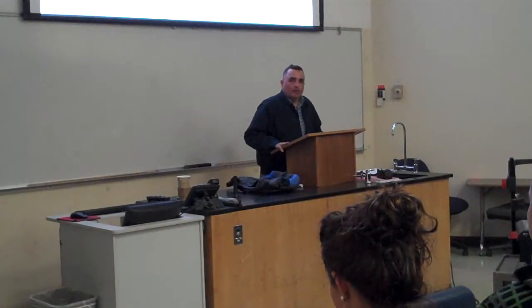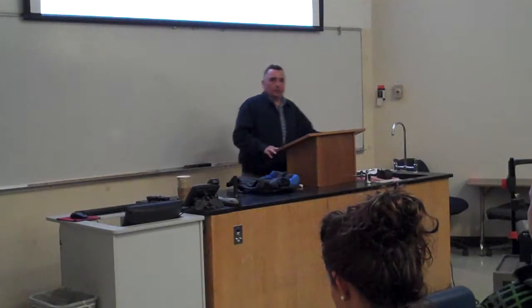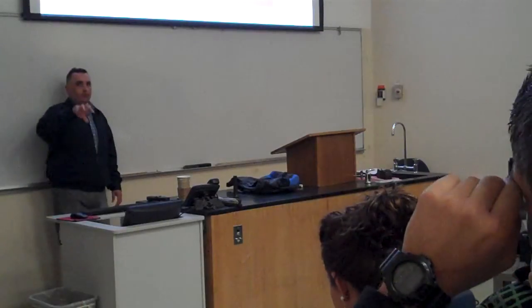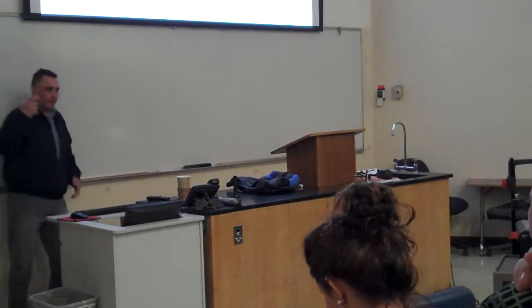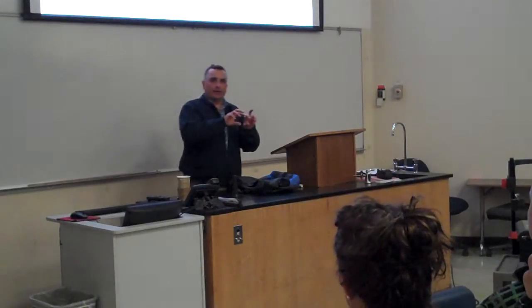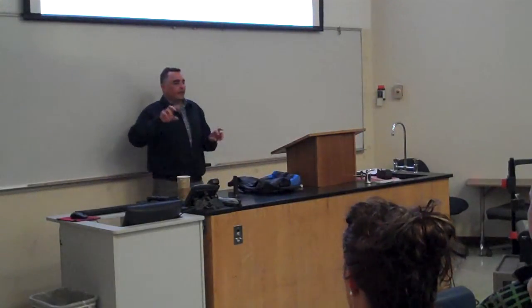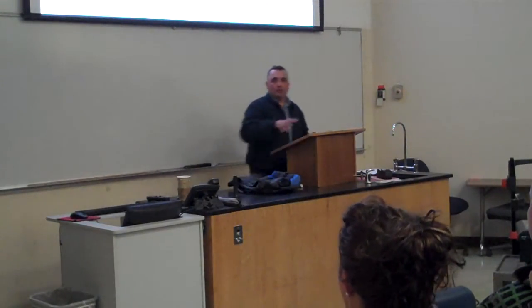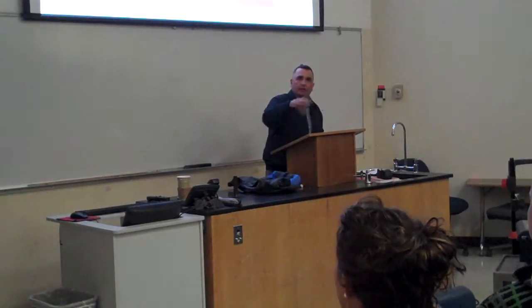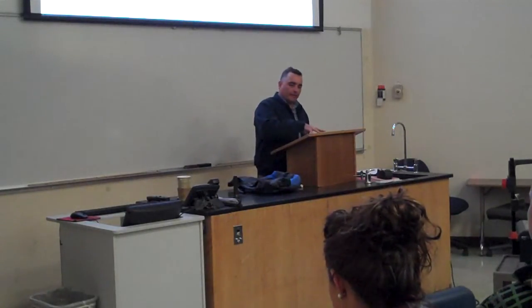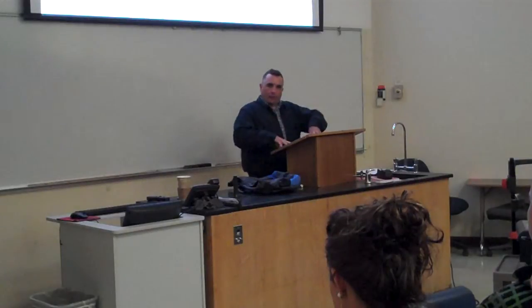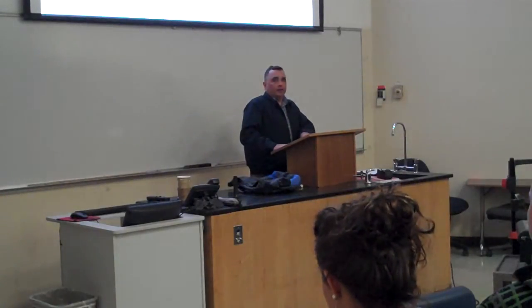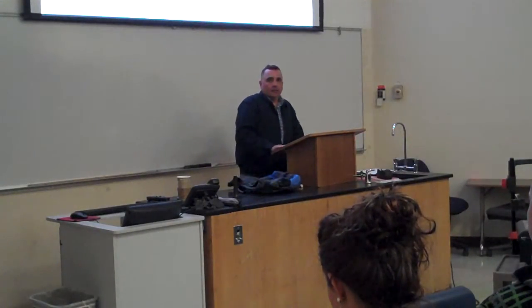A student points out that the explicit cost is the dollar amount. The instructor agrees, clarifying that in this example, the implicit cost is the salary given up — specifically the $10 an hour that could have been earned at Cal Fire. The explicit costs are the actual dollars spent, like the cost of production. The implicit cost is the opportunity cost.